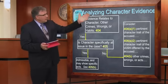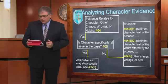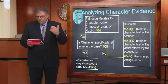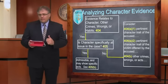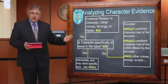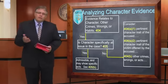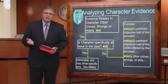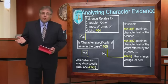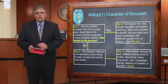If the accused does open that door, there are two ways they can do so, and one way the state can open the door based on a non-character theory of relevancy. Those are outlined in: 404(A)(1), the pertinent character trait of the accused; 404(A)(2), the pertinent character trait of the victim offered by the accused; and then 404(B), other crimes, wrongs, or acts — often referred to as the non-character theory of relevancy, or 404(B) evidence.